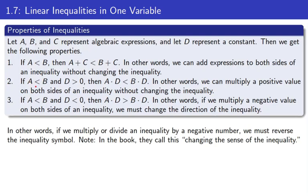If we have an expression like a is less than b, where these can be any sort of algebraic expression, and I multiply by a positive value — or divide — the inequality does not change. Less than stays less than. But if I multiply or divide by a negative value, the inequality symbol flips. The general rule: you may add or subtract whatever you want and the inequality stays the same. However, if you multiply or divide by a negative number, you have to reverse the inequality symbol.